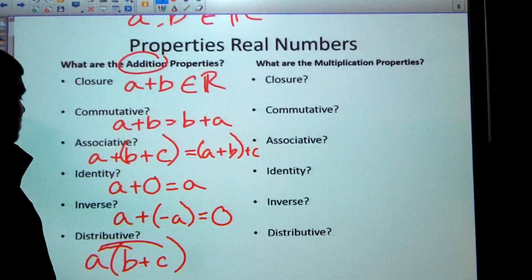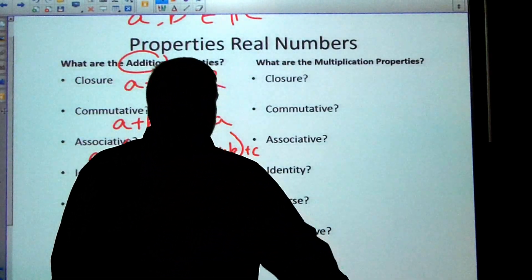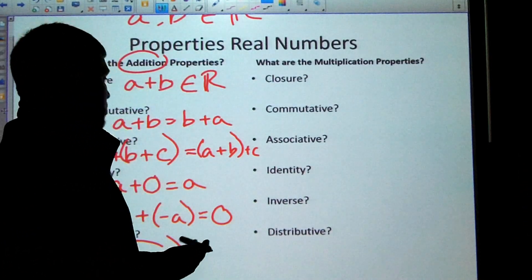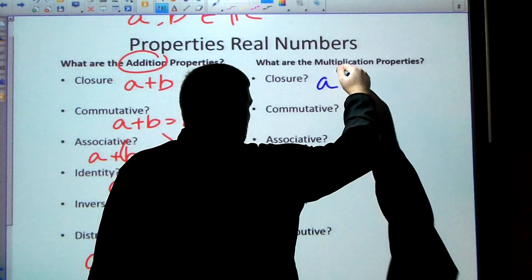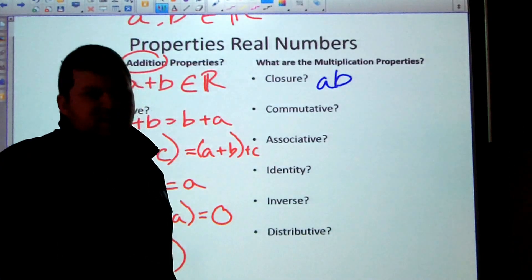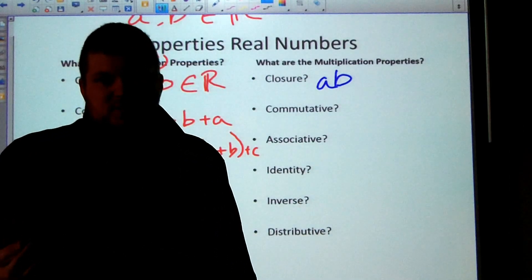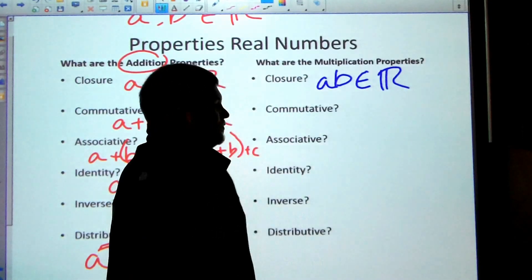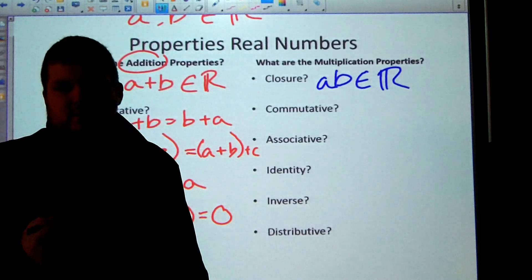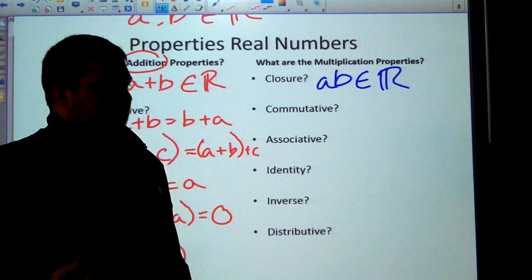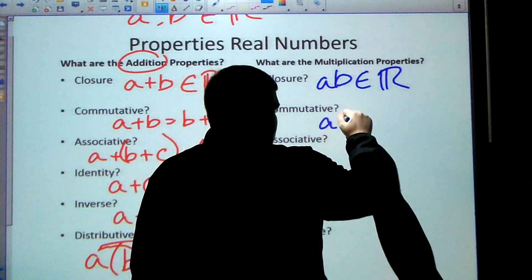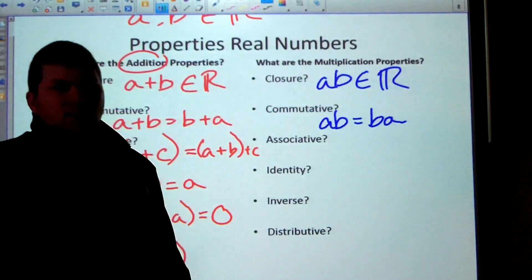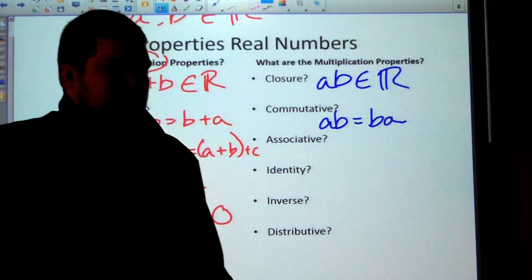Let's go over to the multiplication properties. Now, a lot of these are going to be very similar. So we're still using A and B as our real numbers. So closure. Well, if I multiply two numbers together, let's say one times two, one times two is two. I still get a real number.